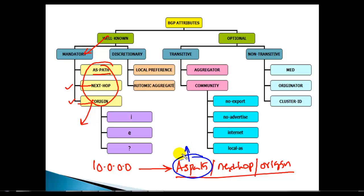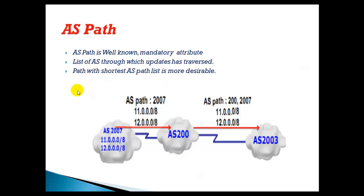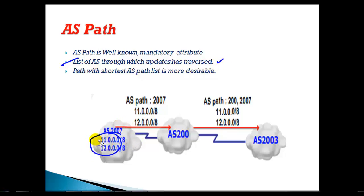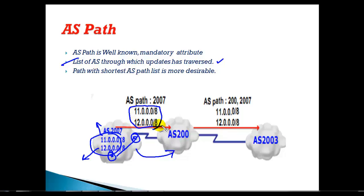AS path is a well-known mandatory attribute. It lists the AS numbers through which the BGP update has traversed. For example, if we have 10.network, 11.network, and 12.network belonging to AS 2007, the border router advertises these to an external router in another autonomous system, carrying the AS path information along with the routing update.